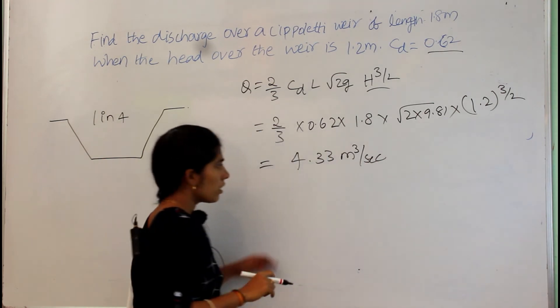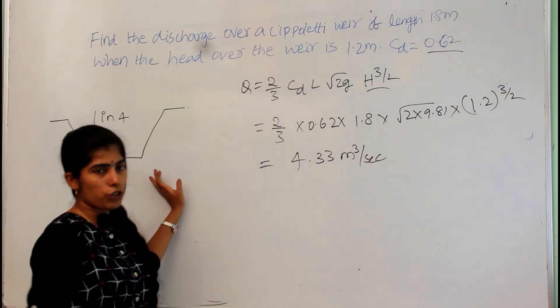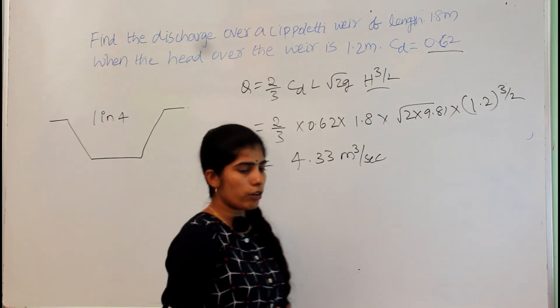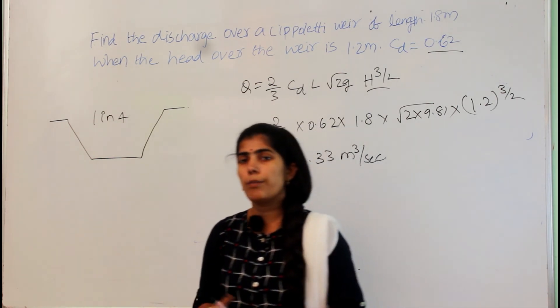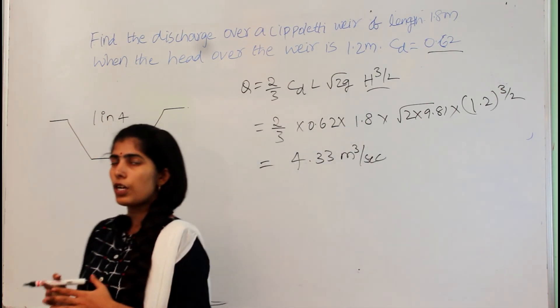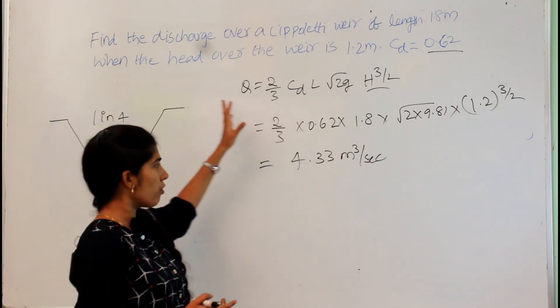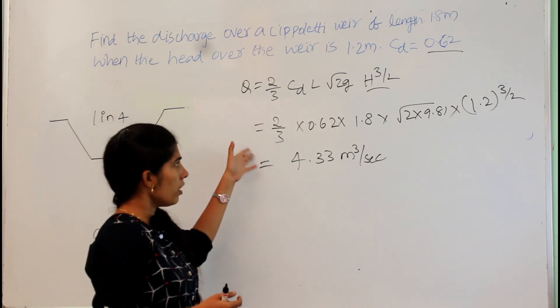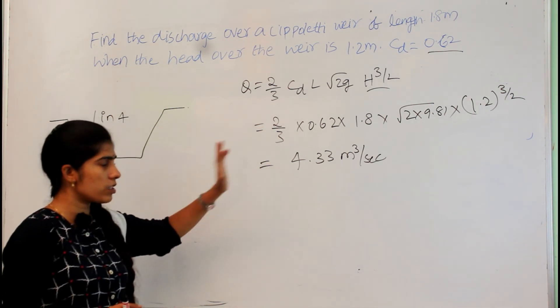So, this is the discharge which is coming from the Cipolletti weir or trapezoidal weir. So, whenever anybody or at any point of your problem you have to find out the discharge from the Cipolletti weir, if you know the discharge for the rectangular weir then same equation is used to find out the discharge from the Cipolletti weir also. In the similar way you have to just substitute the parameters given in the problem and calculate what discharge is coming from the total weir, that is trapezoidal weir.